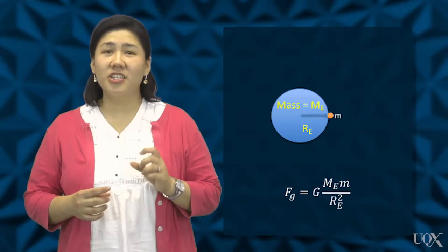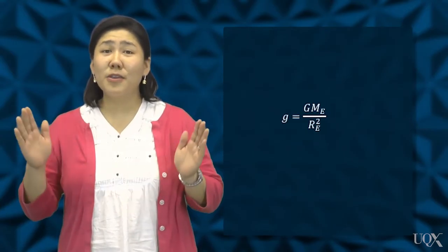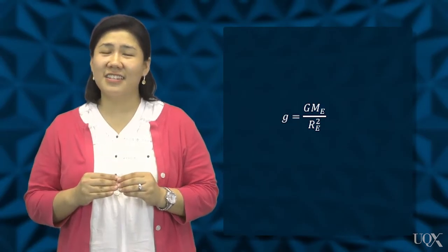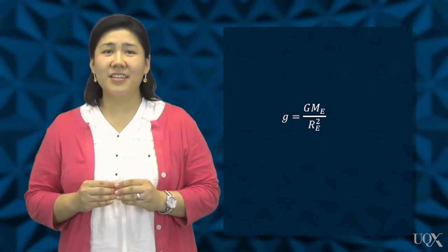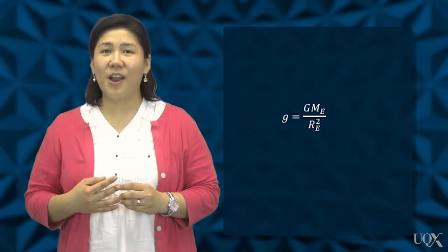For a particular location, G, mE, and rE are constant and may be grouped together under a single constant, g. So the final equation for g becomes G mE over rE squared.